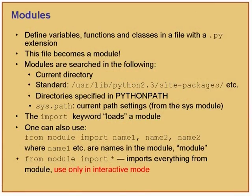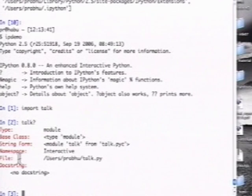When you say 'import modulename', it imports the module into your current namespace. You can also use 'from some_module import some_name'. I said import talk — that gives me a module called talk. It is an object. This talk is a module object from this file here — IPython tells me that.